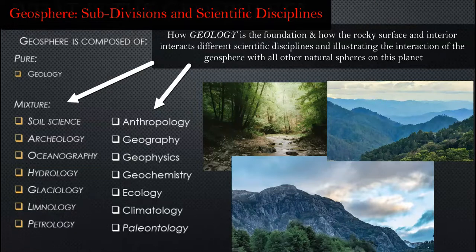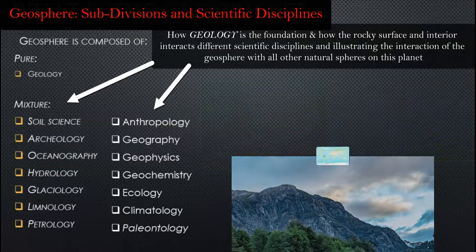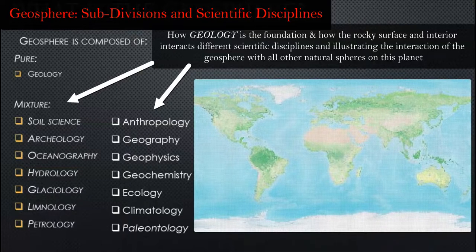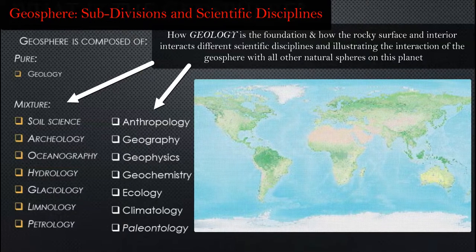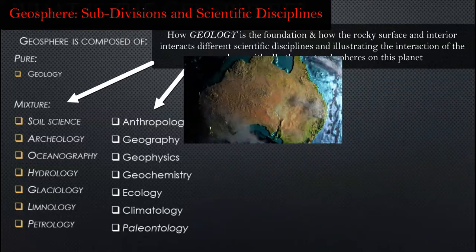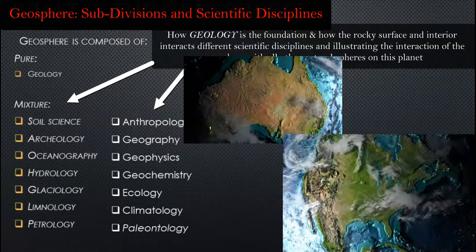Paleontology, which links to archaeology, looks at different life forms in the past. Then you have the pure geography of locations and maps, and how the earth shapes different geographies and landforms in geomorphology.